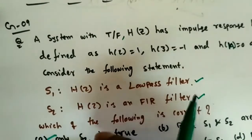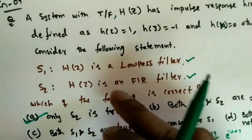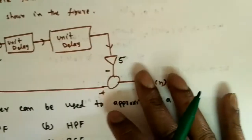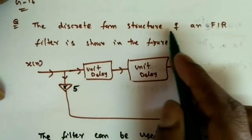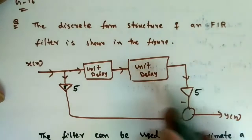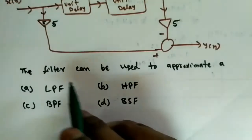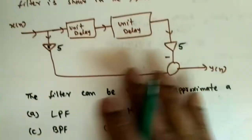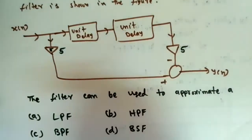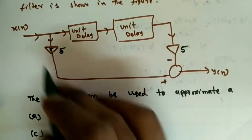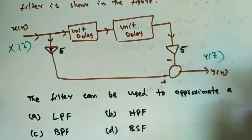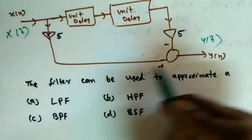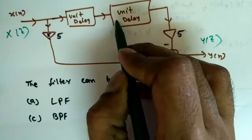That completes the first problem, where two statements were given and we needed to find whether both are correct, both false, or one is the explanation of the other. Next, from GATE 2016: the discrete-form structure of an FIR filter is shown in the figure. We need to identify whether the filter approximates a low-pass, band-stop, high-pass, or band-pass filter. Given the block diagram, we find the transfer function.